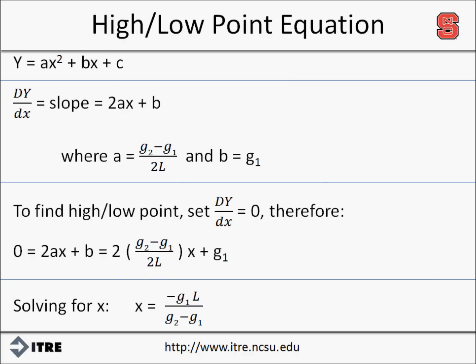The derivative of the general parabolic equation is 2ax plus b. To find the high or low point, we set the slope equal to zero and substitute our relationships for a and b. Therefore, the location of the high or low point can be found using x, which equals negative G1 times L divided by G2 minus G1. Here, x is the distance from the PVC to the highest or lowest point on the curve in stations, L is the total horizontal length of the vertical curve in stations, G1 is the entrance grade in percent including the positive or negative sign, and G2 is the exit grade also in percent including the positive or negative sign.